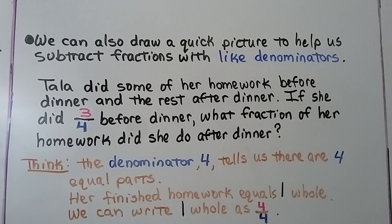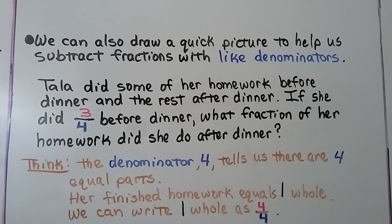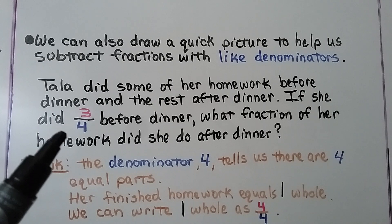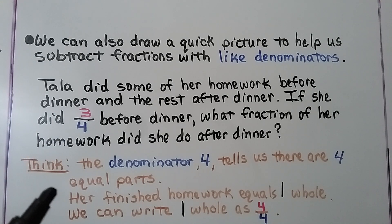We can also draw a quick picture to help us subtract fractions with like denominators. Tala did some of her homework before dinner and the rest after dinner. If she did 3 fourths before dinner, what fraction did she do after dinner? The denominator 4 tells us there are 4 equal parts, and her finished homework equals 1 whole, which we can write as 4 fourths.